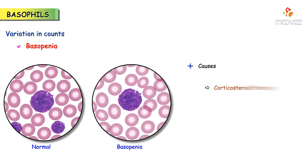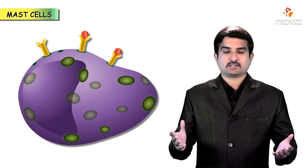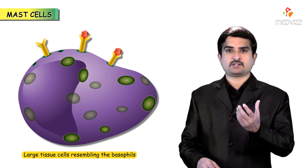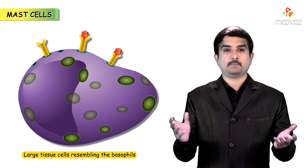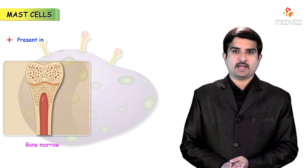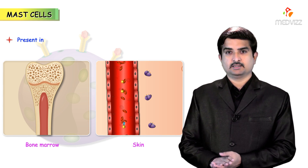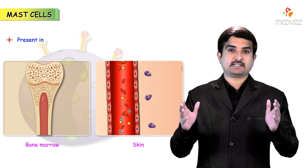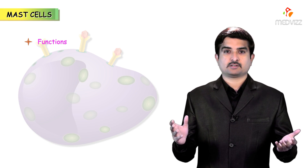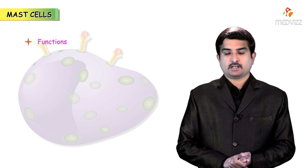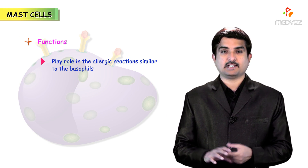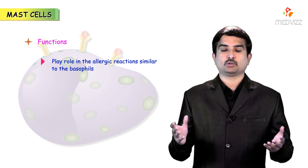Basopenia means a decrease in the basophil count. The causes of basopenia include corticosteroid therapy, drug-induced reactions, and acute pyogenic infections. Mast cells are large tissue cells resembling the basophils. These are present in the bone marrow and immediately outside the capillaries in the skin, and importantly, they do not enter the blood circulation. Mast cells play an important role in allergic reactions, similar to that of basophils.